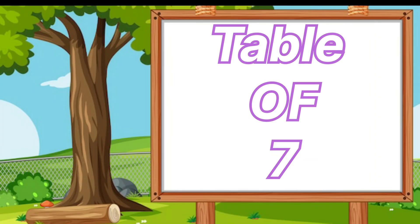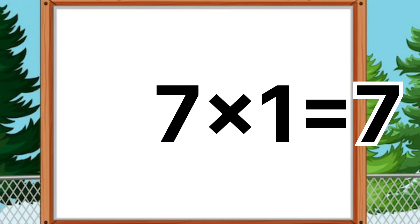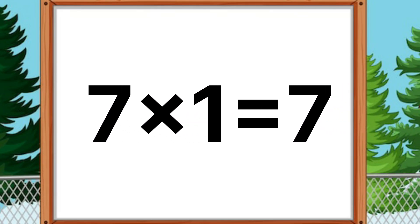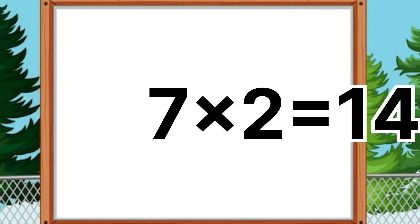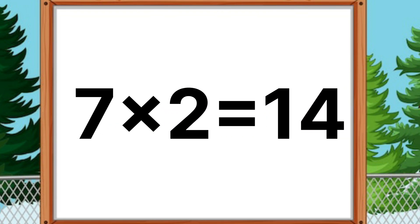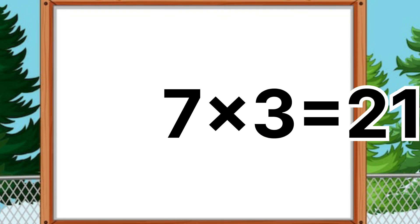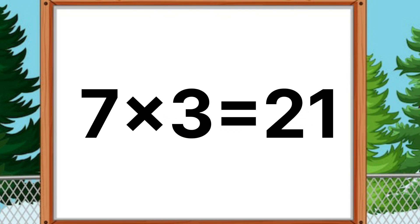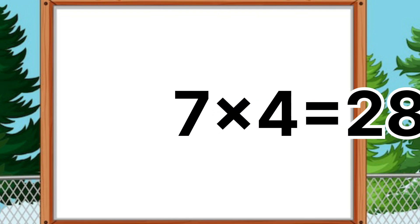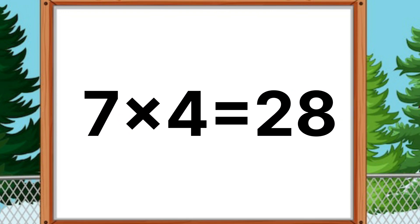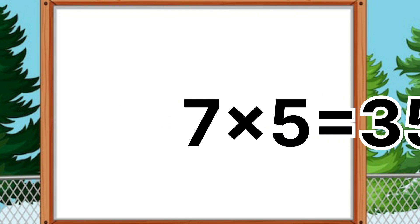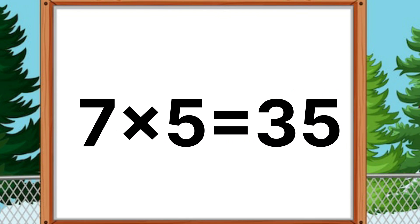Table of seven. Seven ones are seven. Seven twos are fourteen. Seven threes are twenty-one. Seven fours are twenty-eight. Seven fives are thirty-five.